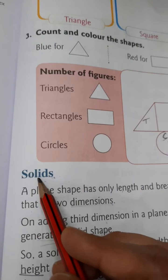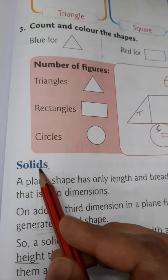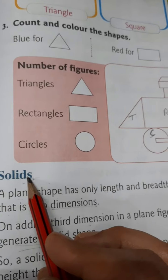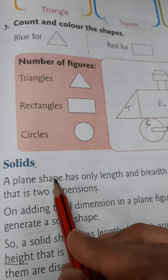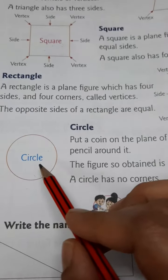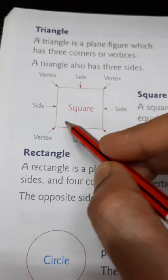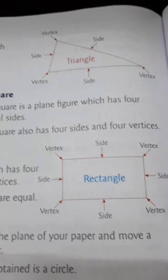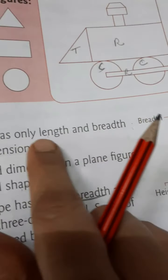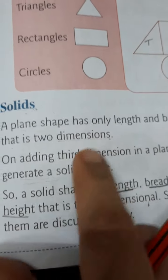Hello children, today we will learn about solids. Before starting with solids, let's revise plane shapes. These are plane shapes: circle, rectangle, square, and triangle. They have only length and breadth, so they are two-dimensional.